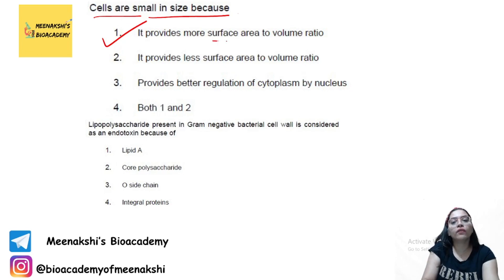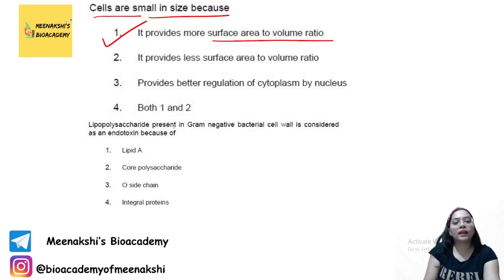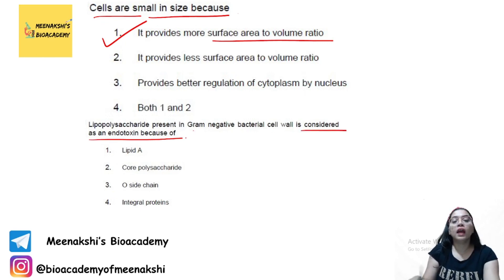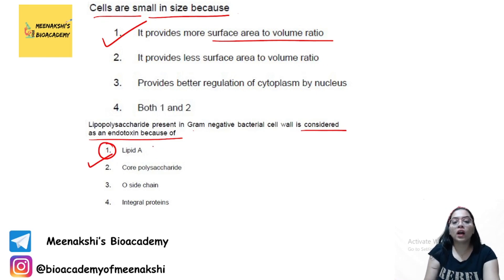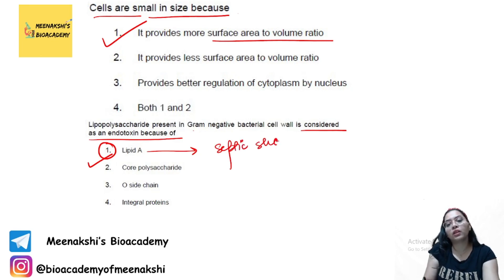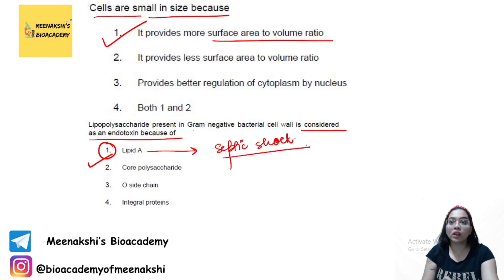Lipopolysaccharide present in the gram-negative bacterial cell wall is considered an endotoxin because of the presence of the component Lipid A, which acts as an endotoxin. The affected individual can also experience septic shock with multiple organ failure, so this is very dangerous.